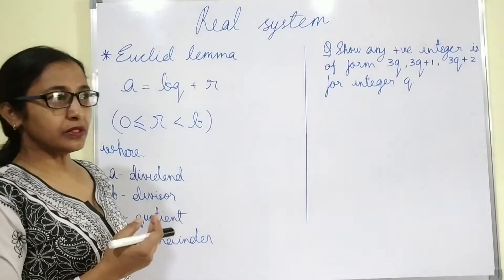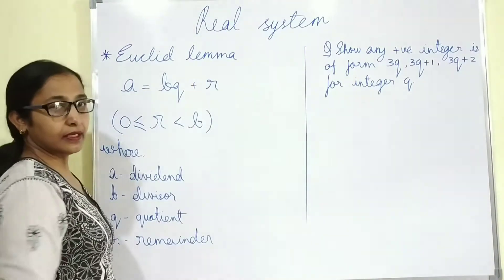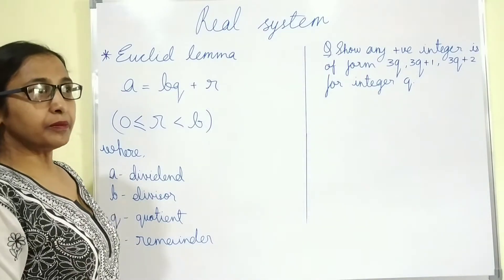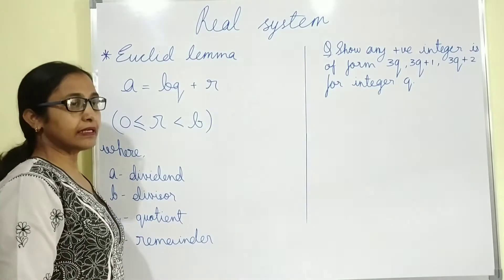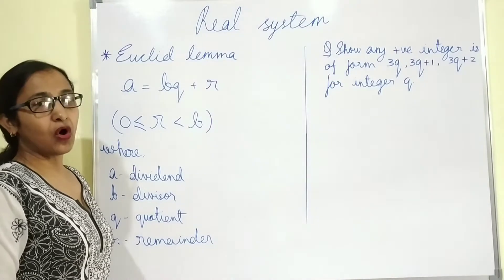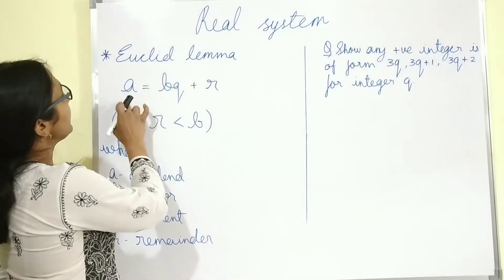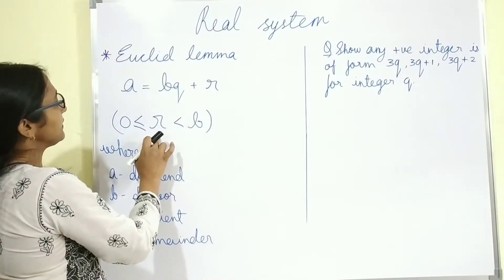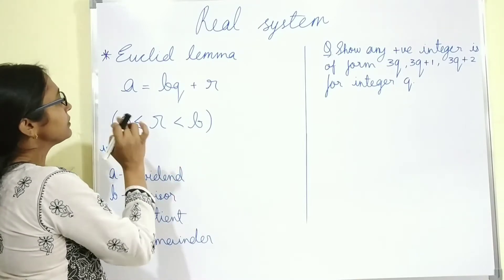We studied about those numbers in earlier classes. Now next term is Euclid's lemma. Euclid's lemma is nothing but divisibility of integers. Otherwise you can say it is the statement of long division process which deals with only positive integers. So A equals to BQ plus R, where R is greater than or equals to 0 and B is greater than 0.